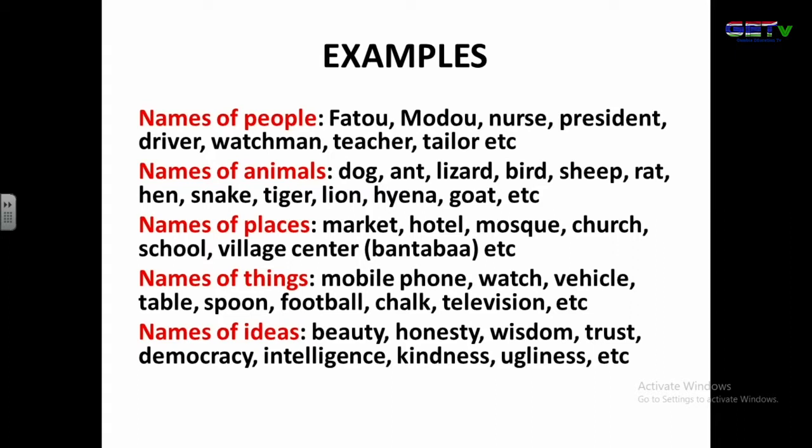Names of places — nouns also name places. For example: market, hotel, mosque, church, school, village, center. In our local languages, we call them Bantaba. So you can say 'I am going to the market' — you're referring to a place. 'He is working at the hotel.' 'My father goes to the mosque every day.' So nouns also name places.